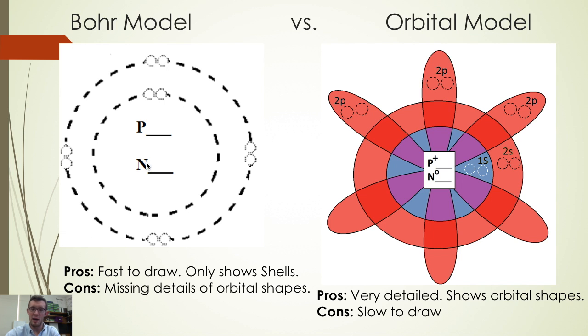We can use a Bohr model which is relatively easy to draw because it only shows the shells of electrons. But the downside of a Bohr model is that it is missing details on what these orbitals embedded in the shells look like.